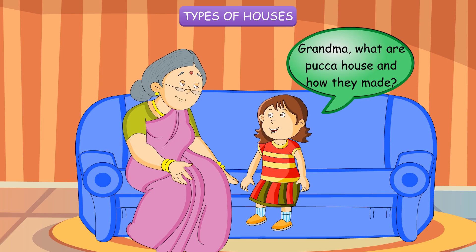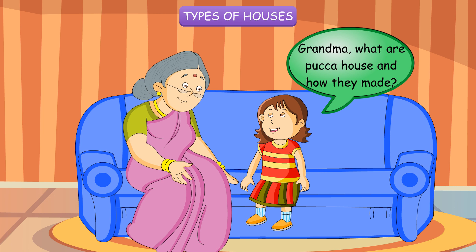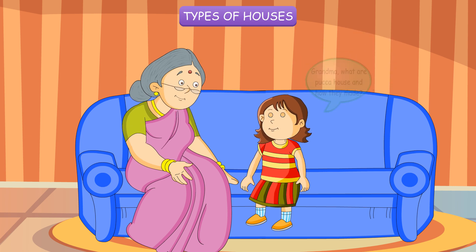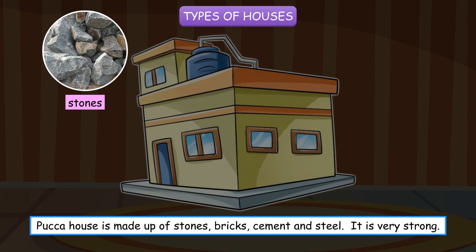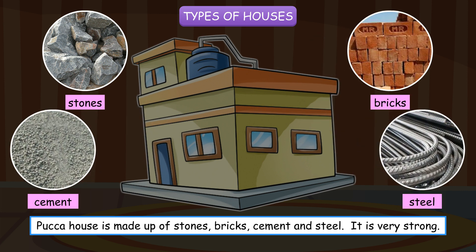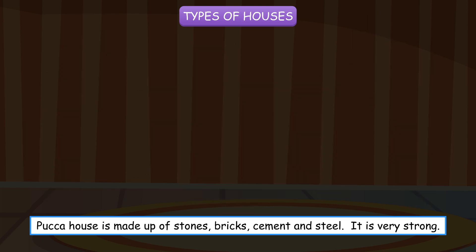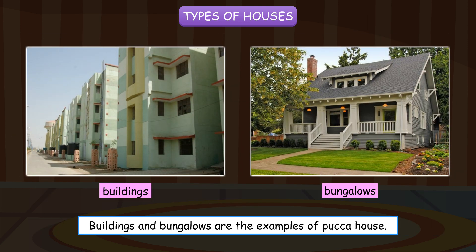Grandma, what are Paka Houses and how are they made? Paka House is made up of stones, bricks, cement and steel. It is very strong. Buildings and bungalows are examples of Paka House.